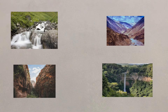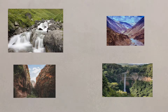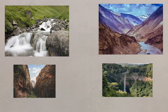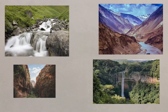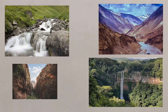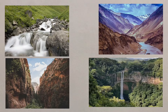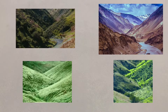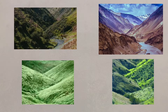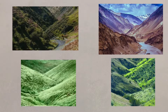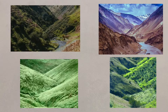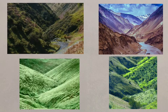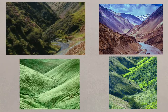In the upper course, erosion is the main driver, with interlocking spurs, waterfalls and gorges being created. Interlocking spurs are found in the upper course where the river's erosive power isn't enough to cut through the land, so it weaves around the spurs.